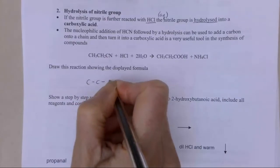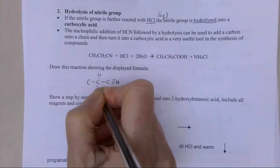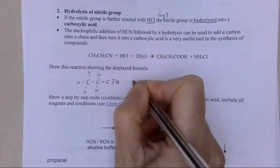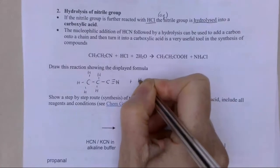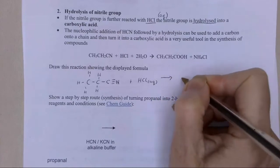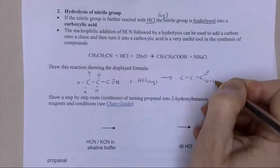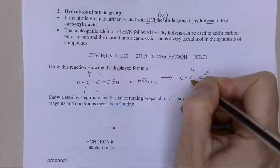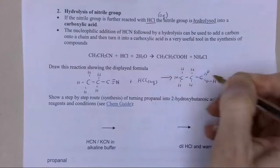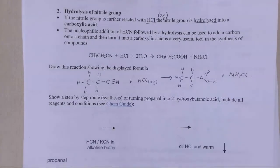I've got my displayed formulas here - I've got that cyanide group. I'm only really interested in the organics, so I'm just going to draw the organics. That's going to add some aqueous HCl - hydrochloric acid in water - and I'm going to get propanoic acid. It's a very useful reaction to know that I can change a nitrile into a carboxylic acid by adding dilute mineral acid, dilute hydrochloric acid.